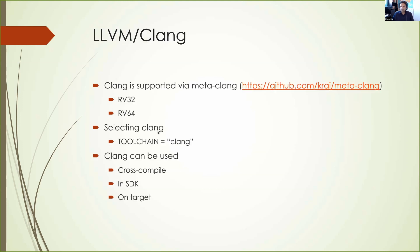We also support LLVM and Clang. It's living in another layer called MetaClang, and both RISC-V 32 and 64-bit are well supported there. Once you include that layer, all you do is select the toolchain to be Clang and it starts to use Clang to build your system. Certain packages not yet buildable with Clang — like glibc — will default to GCC, but most of the system will use Clang. You can also generate Clang-based SDKs and cross-compile tools.